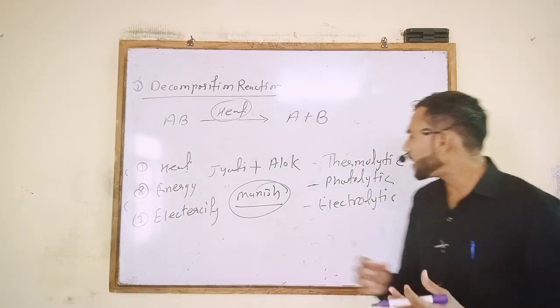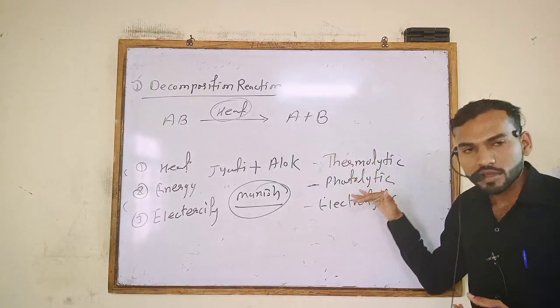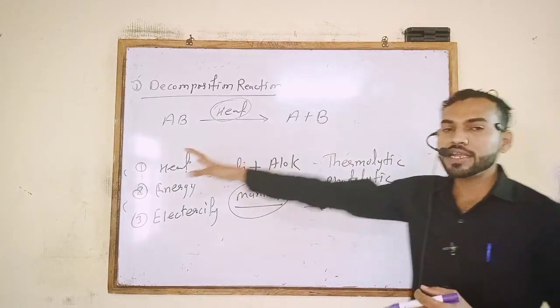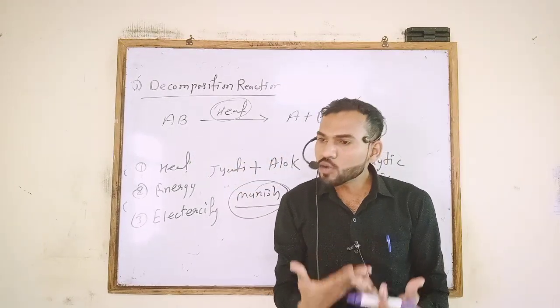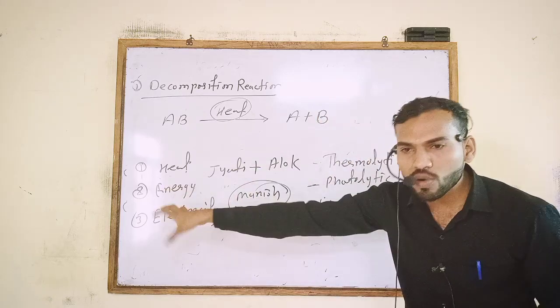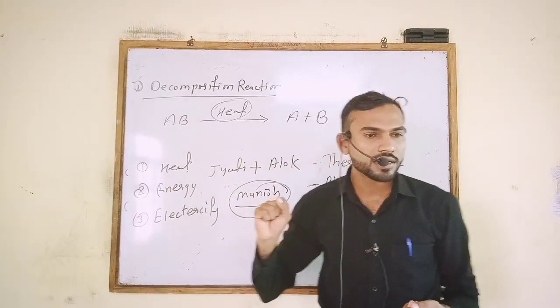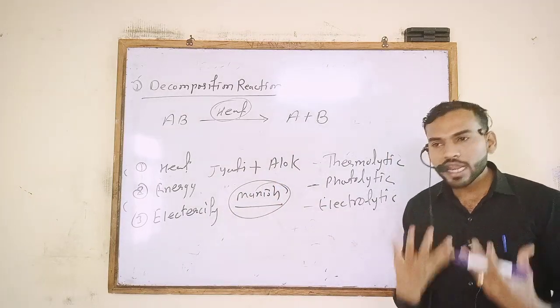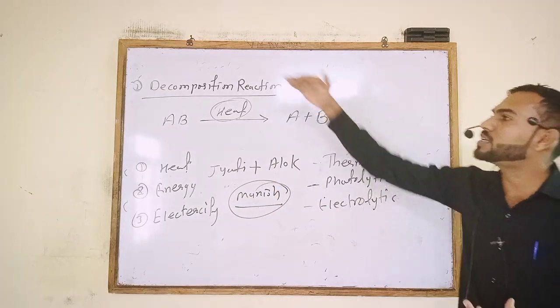So how many types of decomposition? Three types. Thermolytic decomposition if it is heat. Photolytic decomposition if it is energy or sunlight. Electrolytic decomposition if it is electricity. This is decomposition.